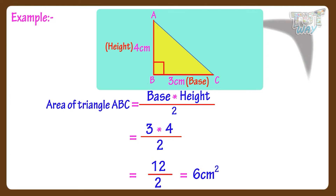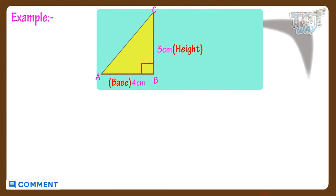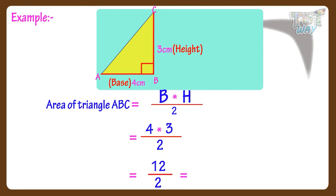Remember, the unit of area is always centimeters squared or meters squared — that is, always in square units. Area of this triangle is 6 centimeters squared. We can also find the area another way: taking the perpendicular BC to the base AB. Area of triangle ABC equals base multiplied by height divided by 2. Here the base is 4 centimeters and height is 3 centimeters, so 4 multiplied by 3 divided by 2 gives 12 divided by 2, which equals 6 centimeters squared.